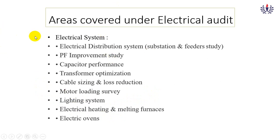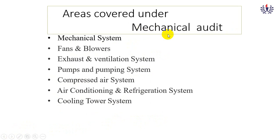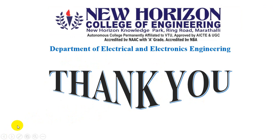Areas covered under energy auditors include the electrical system: distribution system, power factor study, capacitor performance, transformer optimization, cable sizing, motor loading, lighting system, electrical heating, and electric ovens. In the mechanical part: fans and blowers, exhaust and ventilation systems, pumps and pumping systems, compressed air systems, air conditioning and refrigeration systems, and cooling towers. This covers energy conservation and energy auditing as done in detail in industries. Thank you for watching.